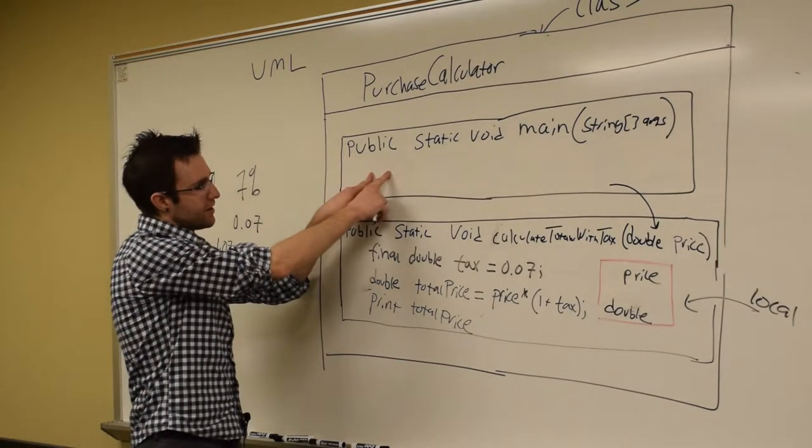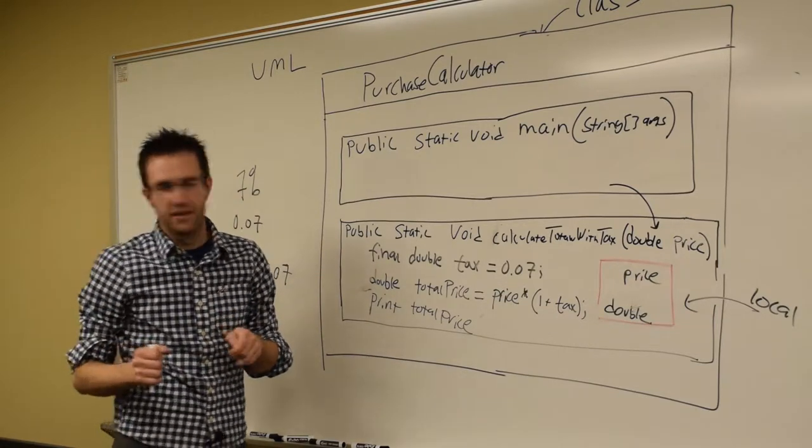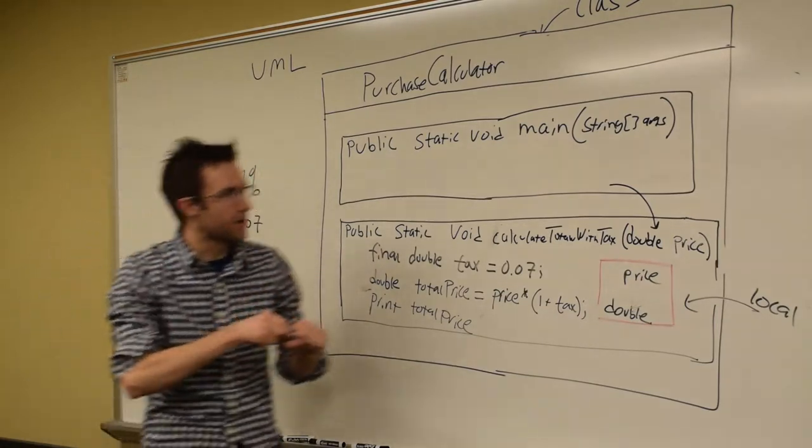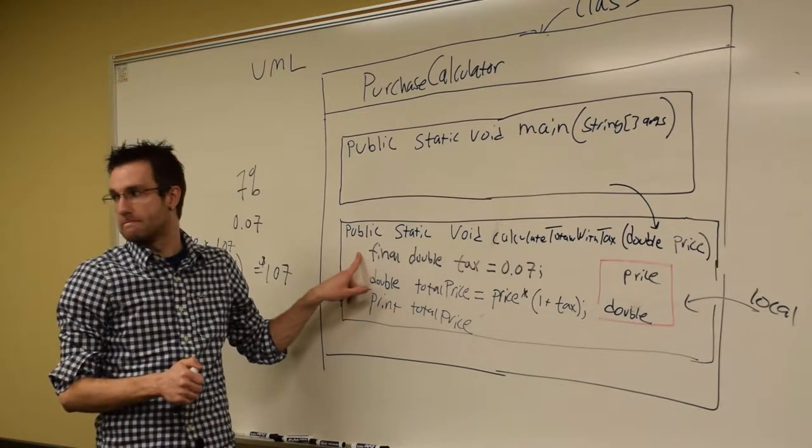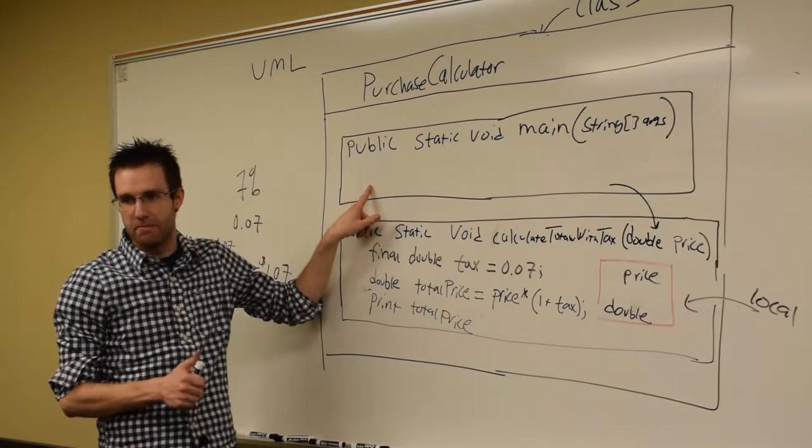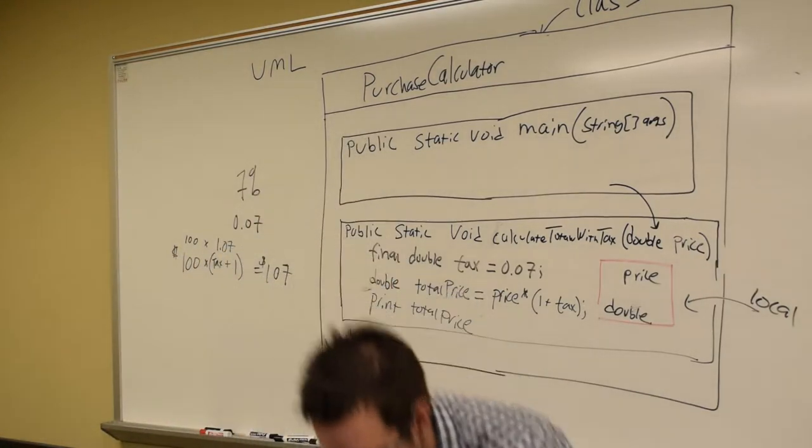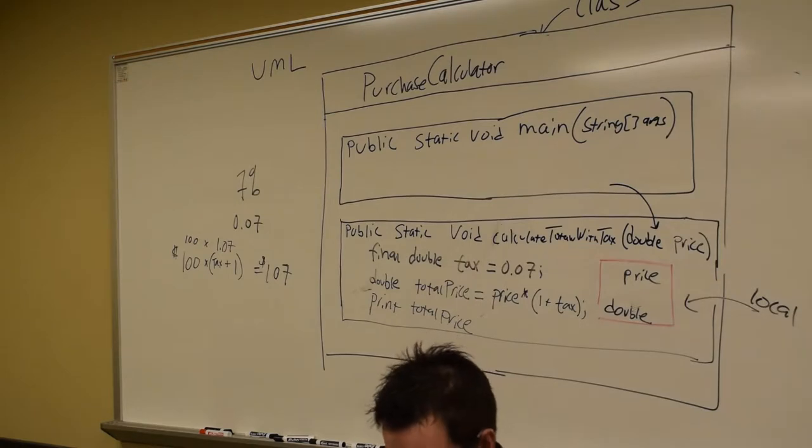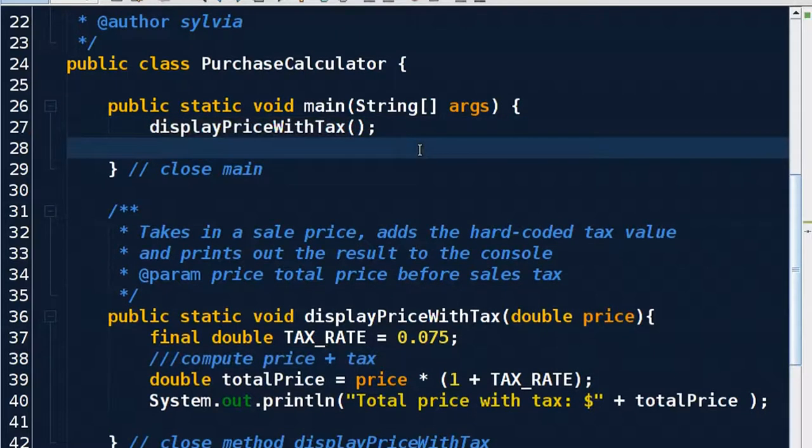So from main, we want to run our method. We do that by calling up the method. Now, last time, how did we run the method print statement? How did we call it? We went inside main and wrote what? We write the method name. So let's do that. And so now, I should be able to come here and say, display price with tax. Open close parenthesis, semicolon.